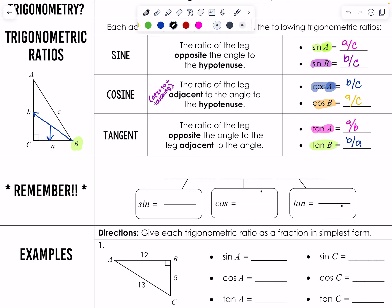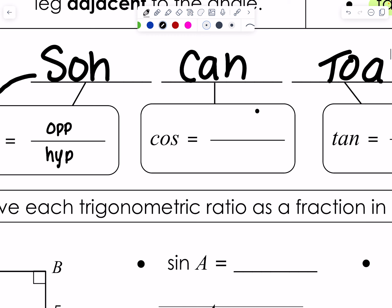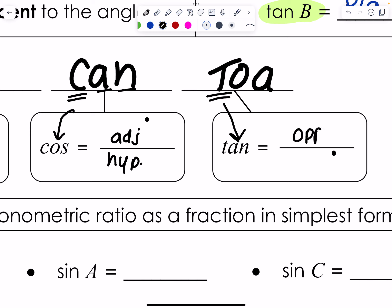That might seem intimidating, but there's a very simple acronym we can use: SOH-CAH-TOA. SOH stands for sine — opposite over hypotenuse. CAH stands for cosine — adjacent over hypotenuse. And TOA stands for tangent — opposite over adjacent. This might have clarified some things; the practice is really where we're going to shine on this.